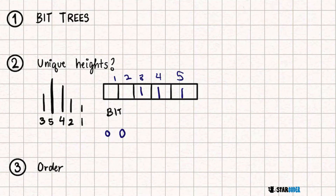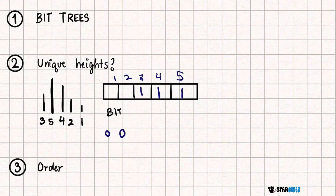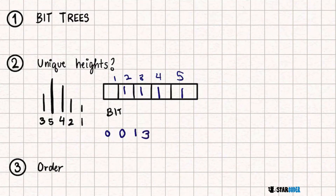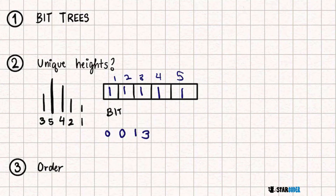Then we do 4, and using the BIT tree we can see there is 1 hair greater than it, so that is going to be 1. Then for our 2, there are going to be 3 hairs greater than it, so it is going to be 3. And then with 1, there are going to be 4 hairs greater than it, which is 4. We add them all up: 8.